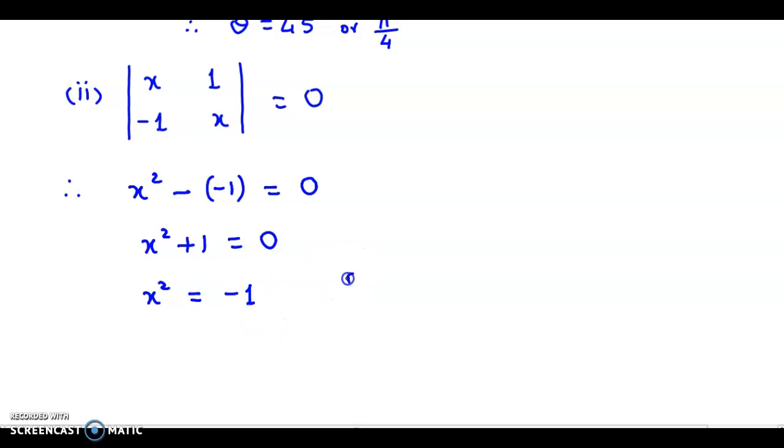Now -1 could be replaced by i² (iota square), right? The imaginary unit. Because we know that i² = -1. So therefore we have x² is equal to i². Therefore the value for x is plus or minus iota.